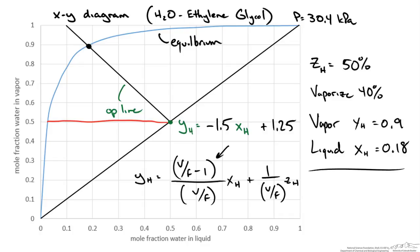At the bubble point we have almost entirely liquid, giving a slope of nearly infinity — essentially a vertical line. Under this condition any vapor that forms is highly enriched in the more volatile component, while the liquid composition is close to the original feed composition.